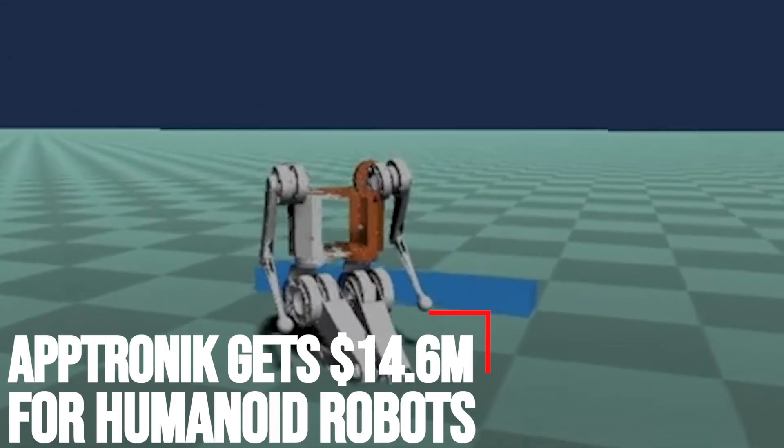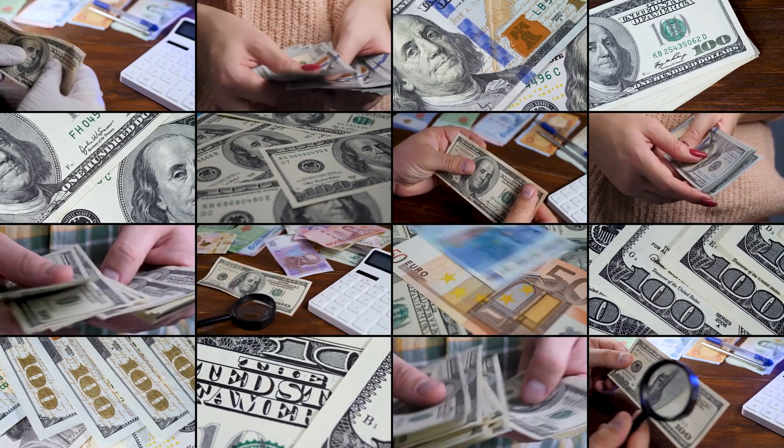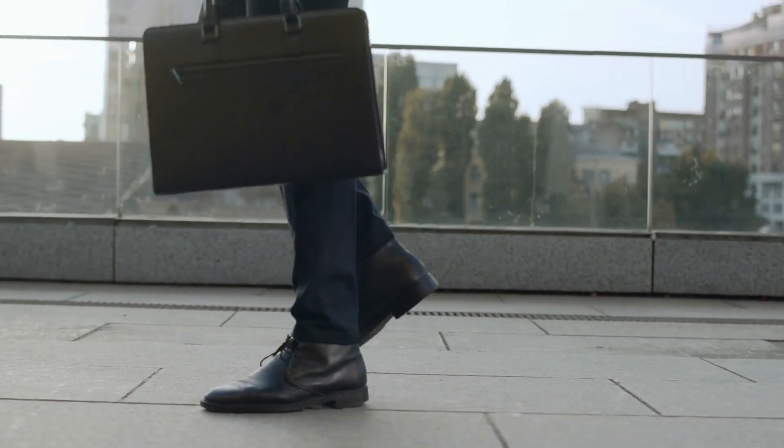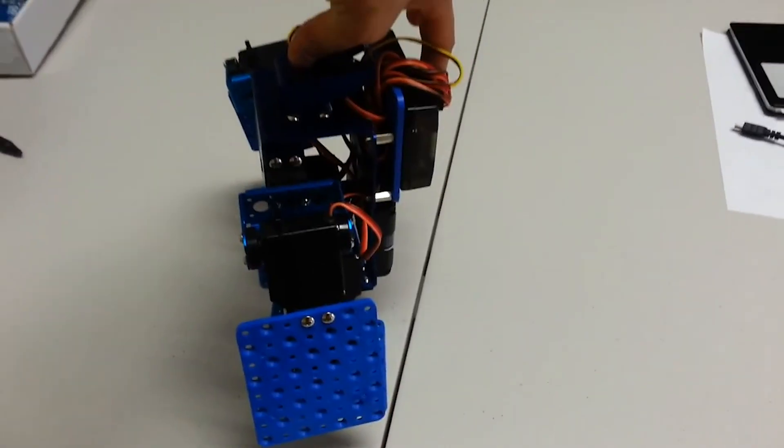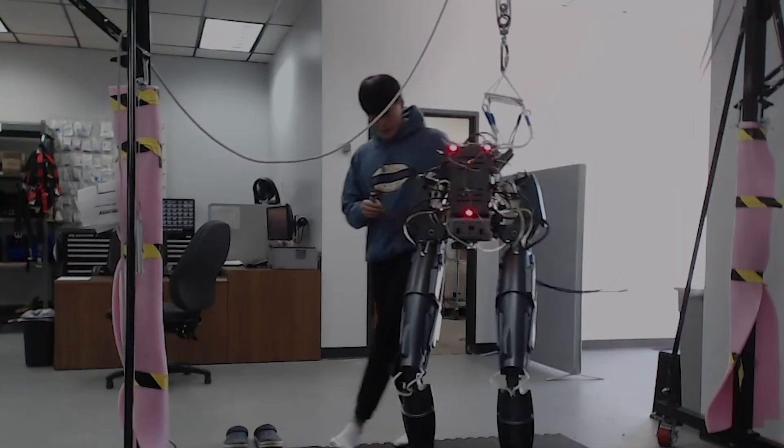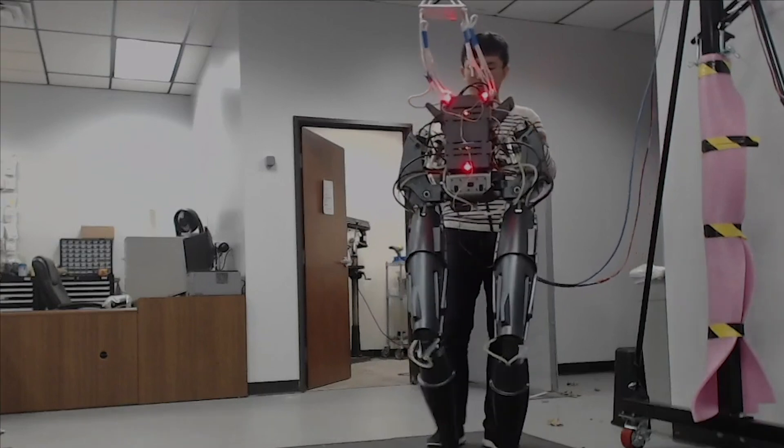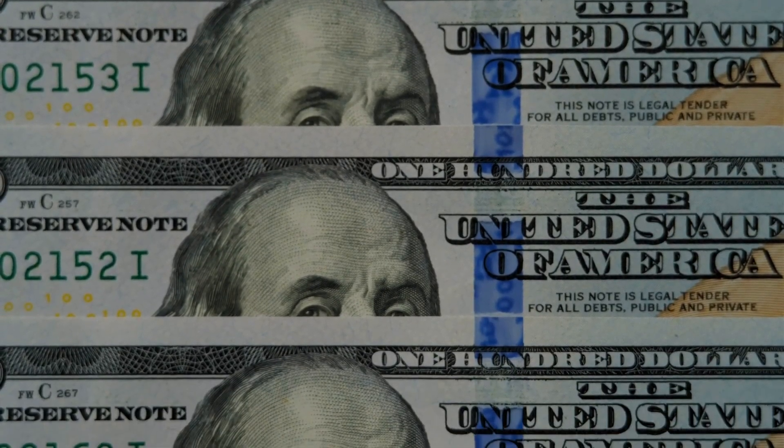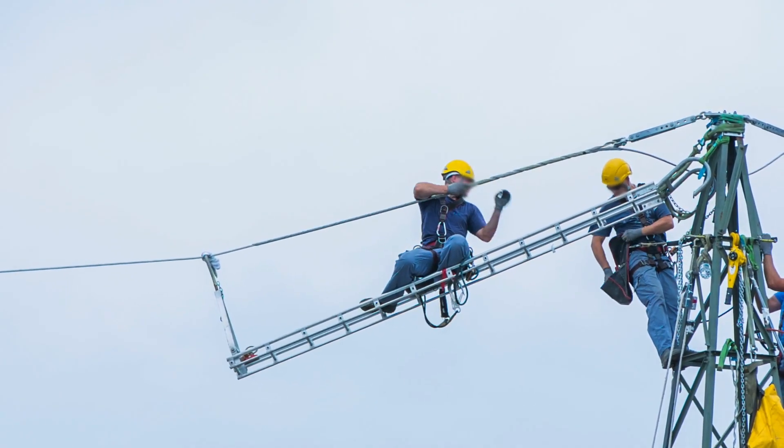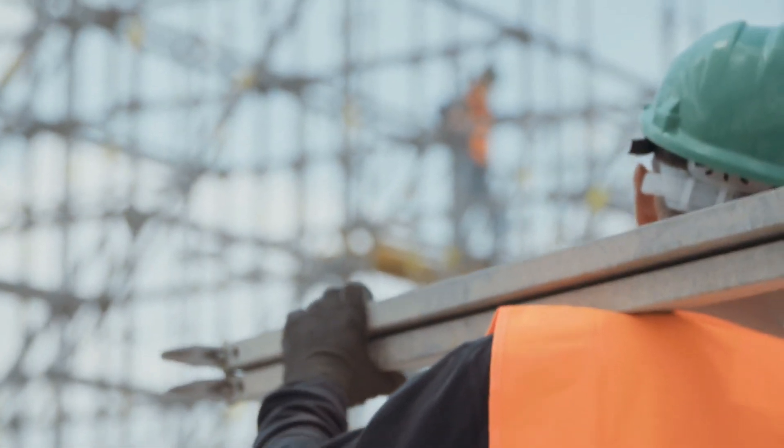Aptronic gets $14.6 million for humanoid robots. With more than 11 million open jobs and only 6 million unemployed workers, the U.S. economy is facing a labor shortage that has sparked more interest in automation and robotics. Aptronic, a robotics company that spun off from the Human-Centered Robotics Lab at the University of Texas at Austin in 2016, has raised $14.6 million in seed funding to develop a multi-purpose humanoid robot that could be used to fill some of those jobs, particularly dull, dirty, and dangerous jobs in the logistics and construction industries.